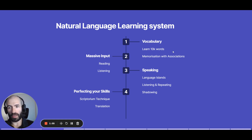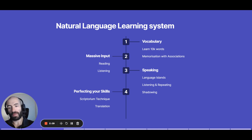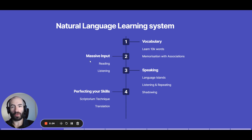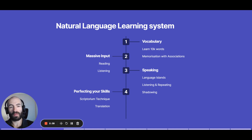First, you need vocabulary — around 10,000 words to understand pretty much everything in the language. The best way to do this is to use associations: you visualize the words and associate them with their meaning. You can memorize hundreds of words a day doing this. This is a game changer because without it, you'll have to rely on input or rote memorization, which is a complete waste of time. If you use flashcards, use them with this technique. It will take more time per flashcard, but you will remember them long term.